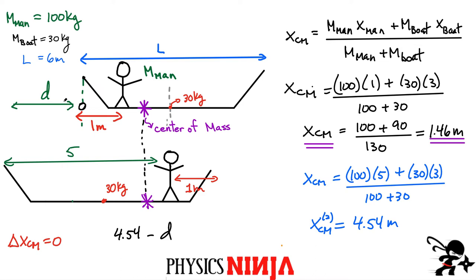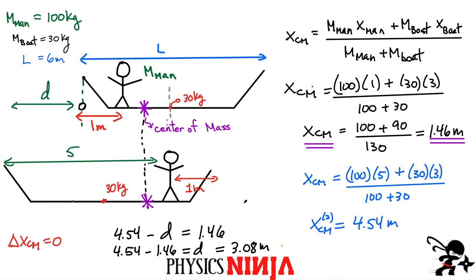Rearranging: D = 4.54 − 1.46 = 3.08 meters. The boat shifts 3.08 meters to the left in order to keep the center of mass aligned at the same position.